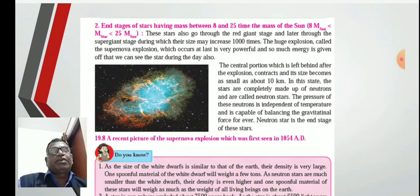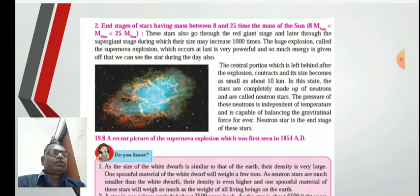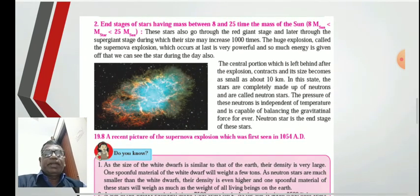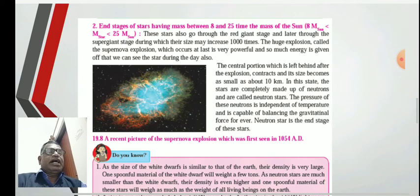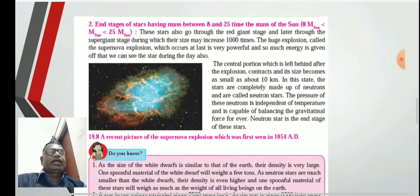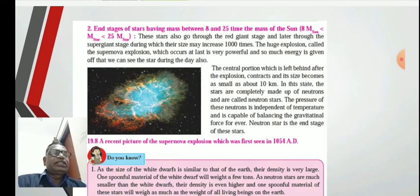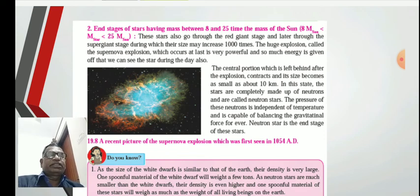The second group of stars has mass between 8 and 25 times the mass of the sun. These stars also go through the red giant stage and later through the supergiant stage during which their size may increase tremendously.